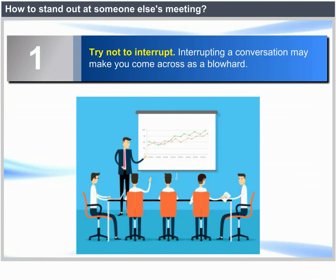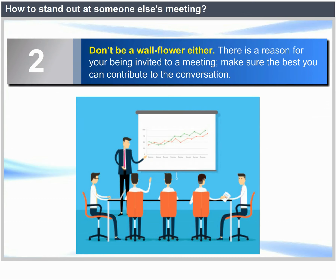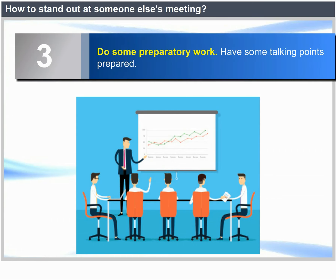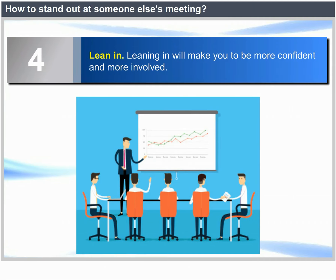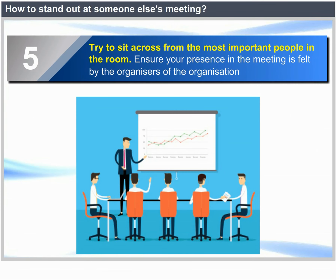How to Stand Out at Someone Else's Meeting. 1. Try not to interrupt — interrupting a conversation may make you come across as a blowhard. 2. Don't be a wallflower either; there is a reason why you are invited to a meeting, so make sure you contribute to the conversation. 3. Do some prep work — have some talking points prepared. 4. Lean in — you look more confident and more involved that way. 5. Try to sit across from the most important people in the room and ensure your presence is felt by the who's who of the organization.